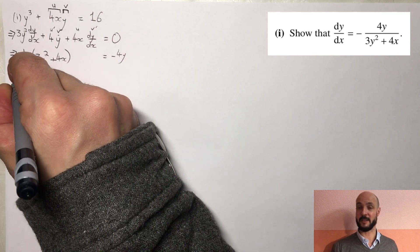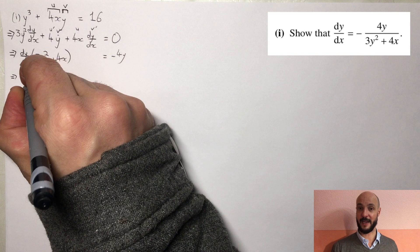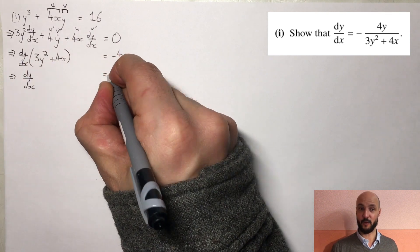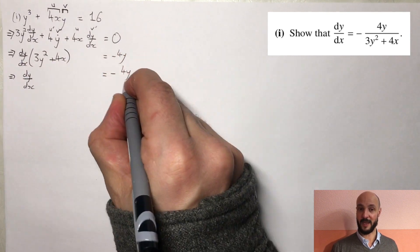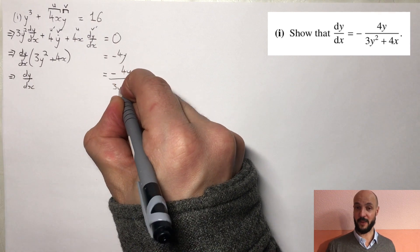And then if we divide both sides by 3y squared plus 4x we get dy/dx equals minus 4y over 3y squared plus 4x, which is exactly what they wanted us to show.